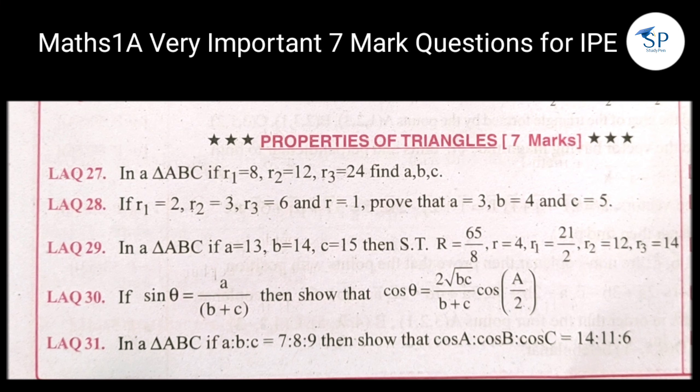And next, two properties of triangle — here we have 4, 5, and 9. First one: in triangle ABC, r₁ = 8, r₂ = 12, r₃ = 24, find a, b, c. Next: r₁ = r₂ = 3, r₃ = 6, prove that a = 3, b = 4, c = 5. In triangle ABC, a = 13, b = 14, c = 15, then solve that R = 65/8. These three models are very important.